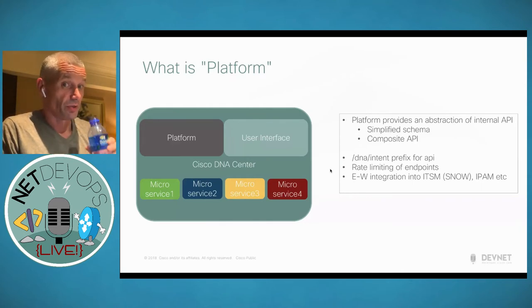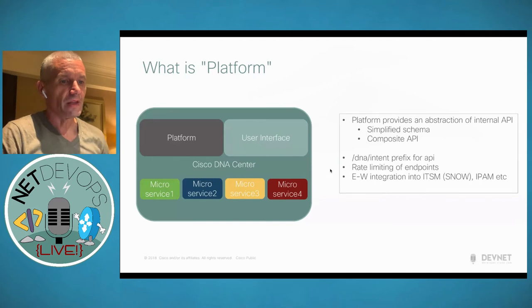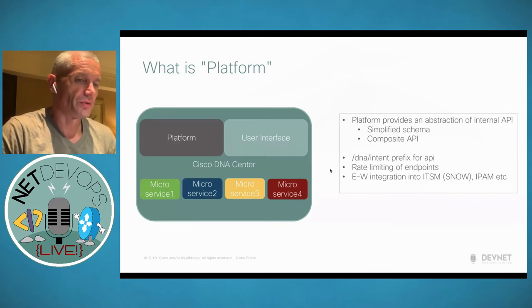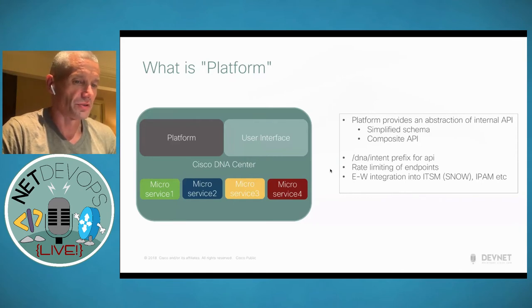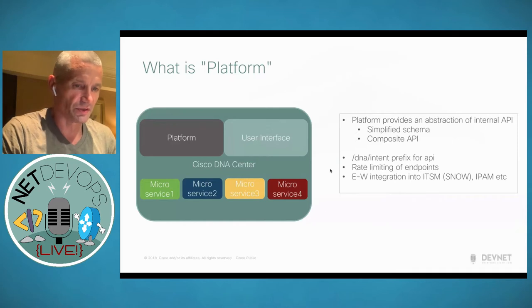The Platform APIs have a different prefix: `/dna/intent`. There is rate limiting on these endpoints, so you may see rate limiting messages if you send too many queries. Platform is also used for east-west integration into IT service management tools like ServiceNow, IP address management, security integrations, and other services — providing access to these APIs in a more consumable way.